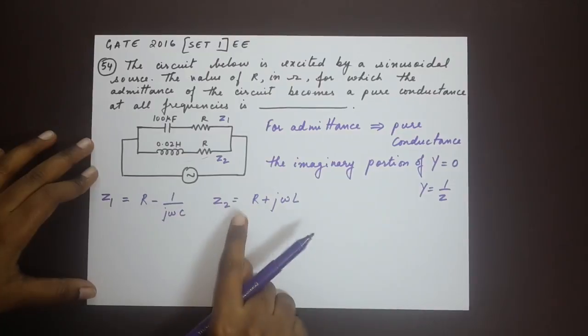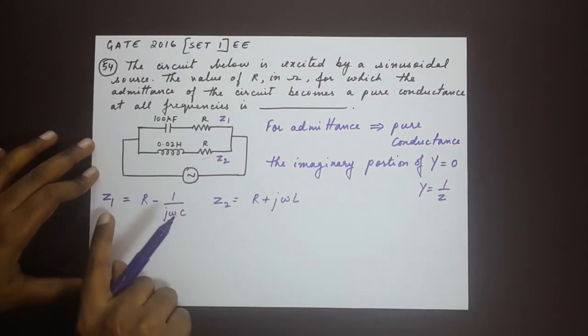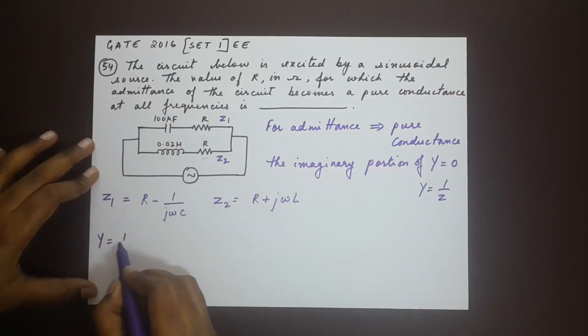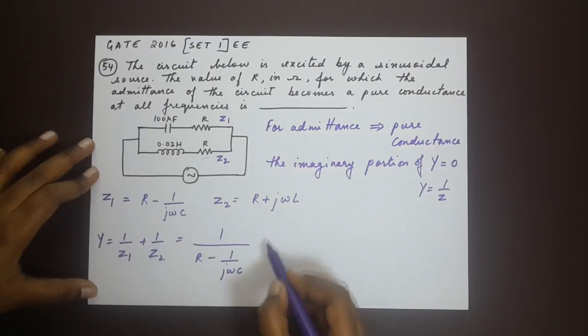Now, writing this in terms of y. Y would be the sum of 1 by z1 plus 1 by z2. Y would be equal to 1 divided by R minus 1 by jωc plus 1 by R plus jωL.